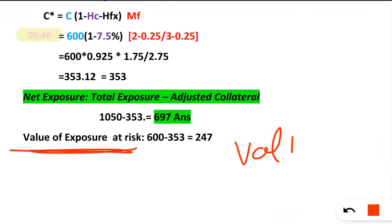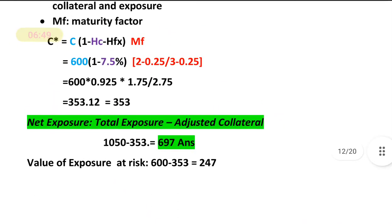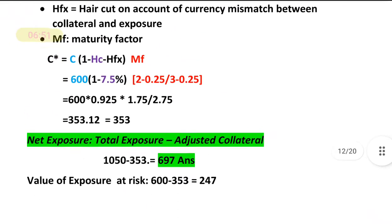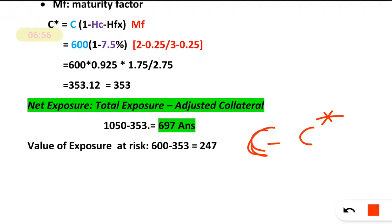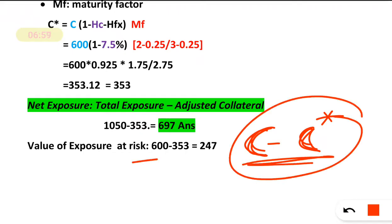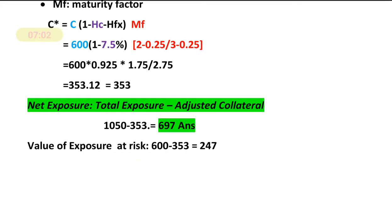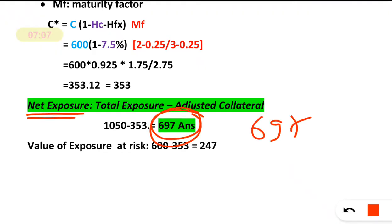If the question asks for value at risk instead, you would calculate collateral minus adjusted collateral. But here, the question only asks for net exposure, so the final answer is 697 crore.